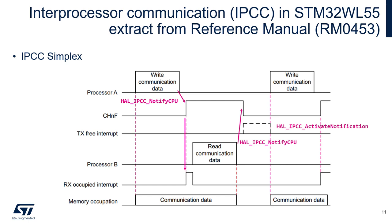IPCC in simplex mode: Processor A sends data by writing communication data, then calls HAL_IPCC_NotifyCPU, which triggers an RX interrupt on Processor B. This interrupt triggers the read communication data operation on Processor B. After completing the read, Processor B calls HAL_IPCC_NotifyCPU again, which triggers the TX Free interrupt on Processor A — effectively clearing the flag on the selected IPCC channel, which allows Processor A to write the next data to the shared buffer.